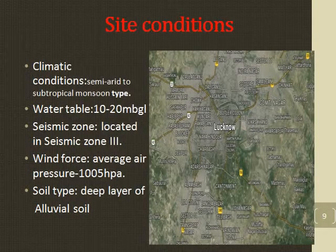Site Condition. Considering the Lucknow region, the climatic condition varies from semi-arid to subtropical monsoon. The water table is 10 to 20 meters below ground level. It is very important to note the seismic zone — Lucknow is located in seismic zone 3. The wind force in Lucknow has an average air pressure of about 1005 hPa. The soil type is a deep layer of alluvial soil.